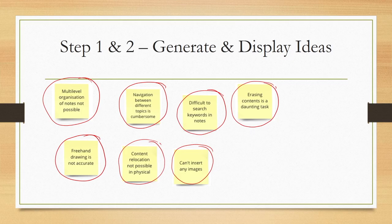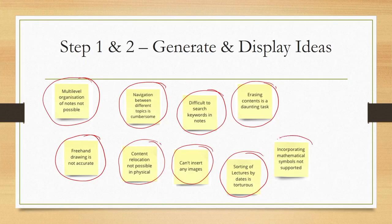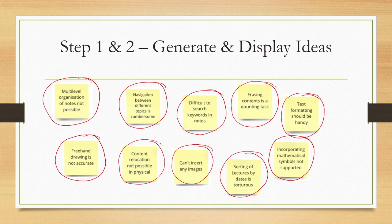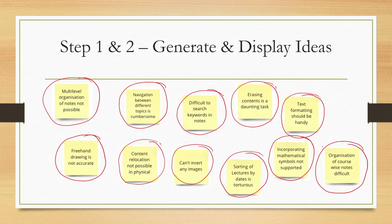Another observation: erasing contents is a difficult and daunting task. Another: sorting of lectures by dates is torturous. One note says: incorporating mathematical symbols not supported. Another: text formatting should be handy. And: organization of course-wise notes is difficult. Many observations have been made — this is only a subset of all possible observations that could have been made with respect to the three tools and user behavior, just to give some idea of what is meant by data collected during the observational phase.